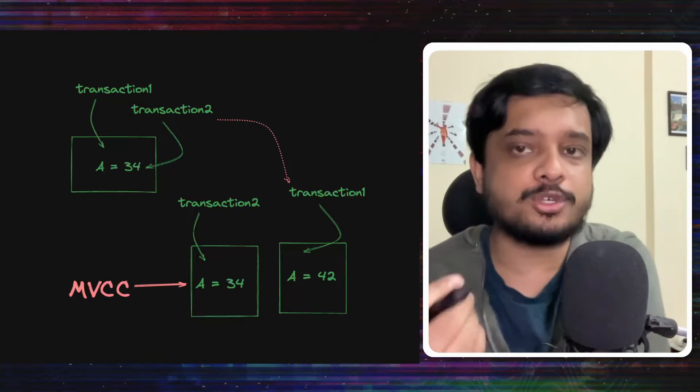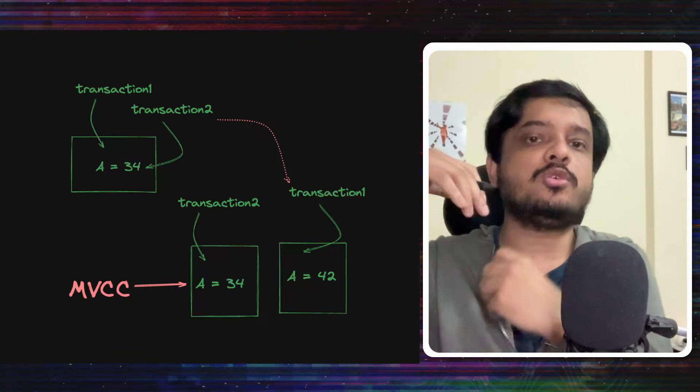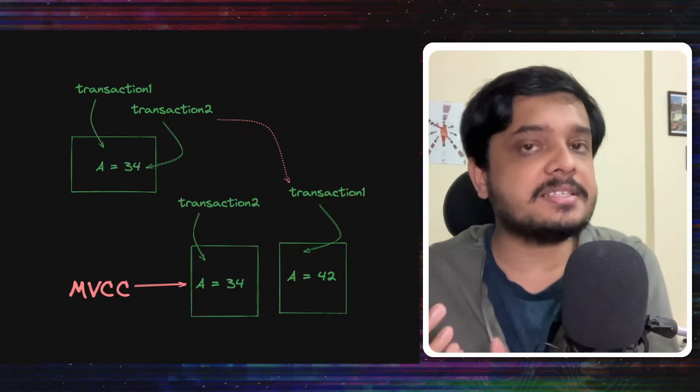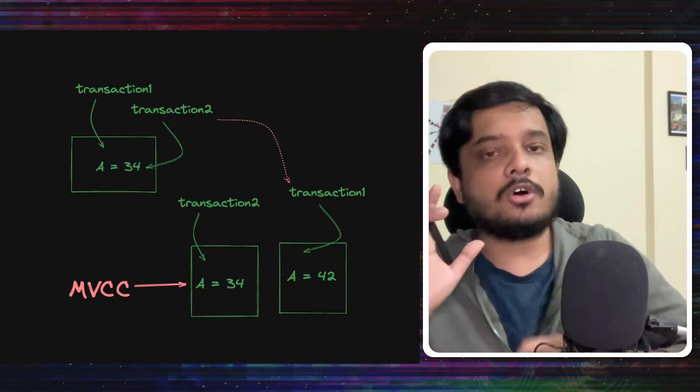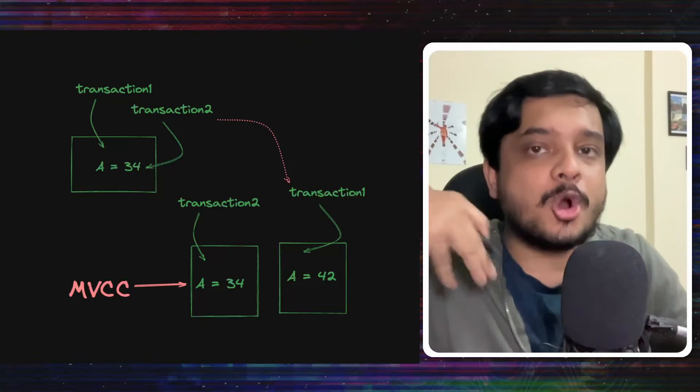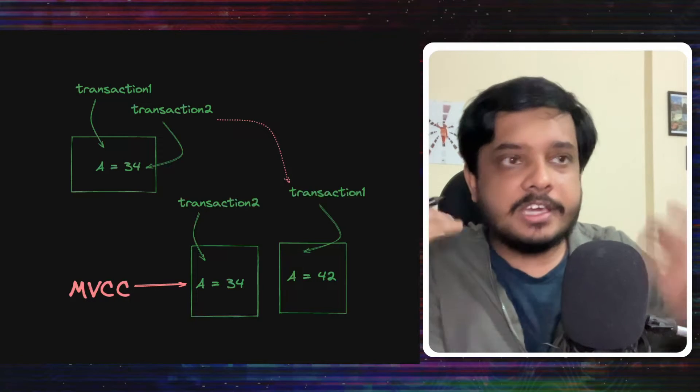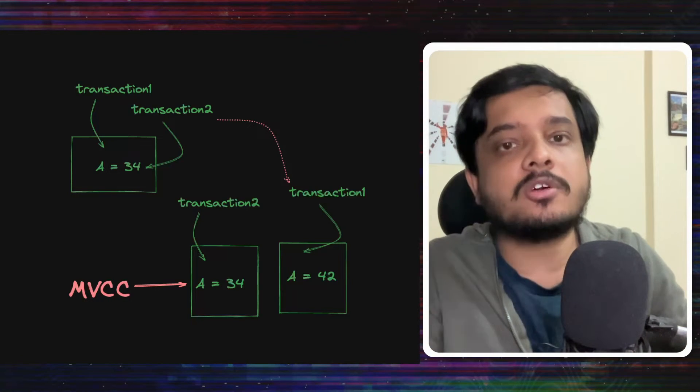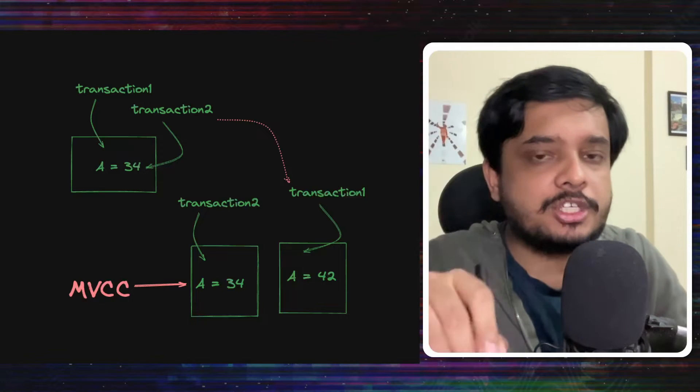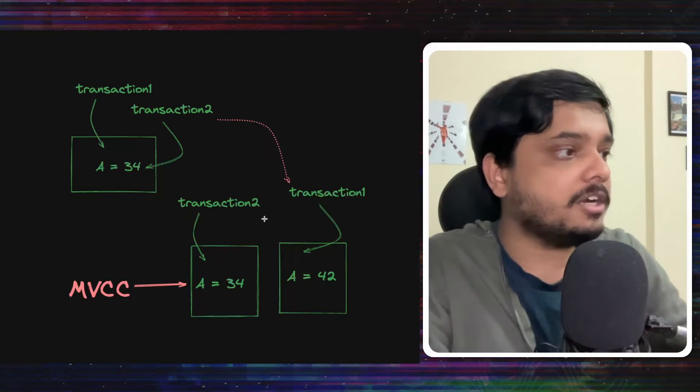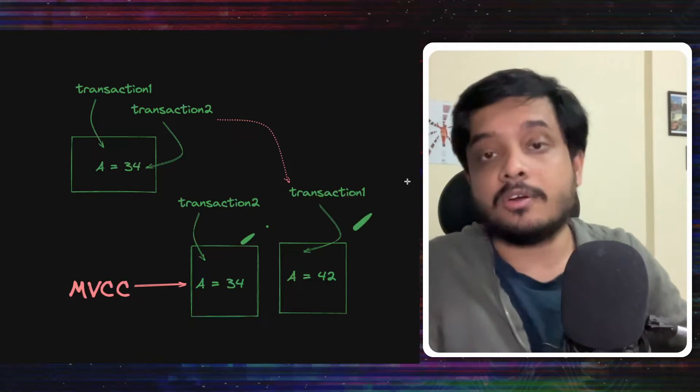Why does concurrency issues happen? Simply because there are two transactions trying to update the same data and they conflict. So let's do one thing. Let them not operate on the same data. What if each transaction operates on a different copy of the data? What if each transaction operates on a different version of the data?